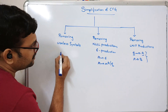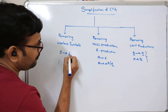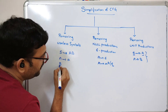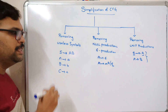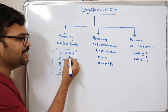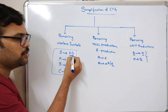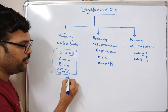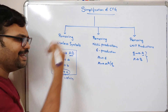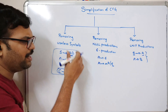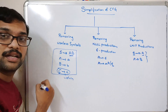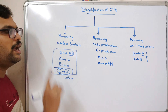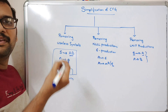Coming to useless productions, for example: S tends to AB, A tends to small a, B tends to small b, and C tends to small c. In these production rules, S only has non-terminals A and B — there is no concept of non-terminal C. This type of production is called a useless production. We can simply remove it because in deriving any string we will not use non-terminal C. Such useless productions can be removed.